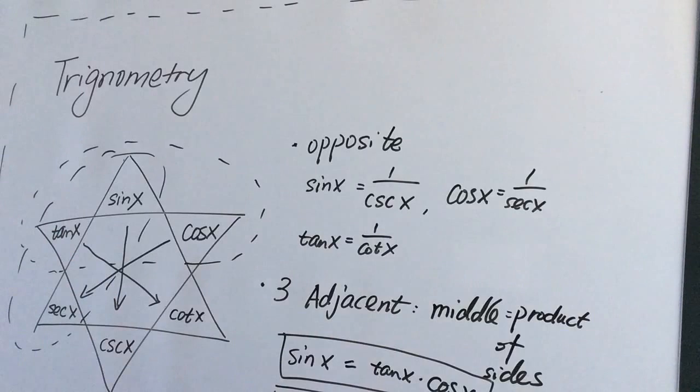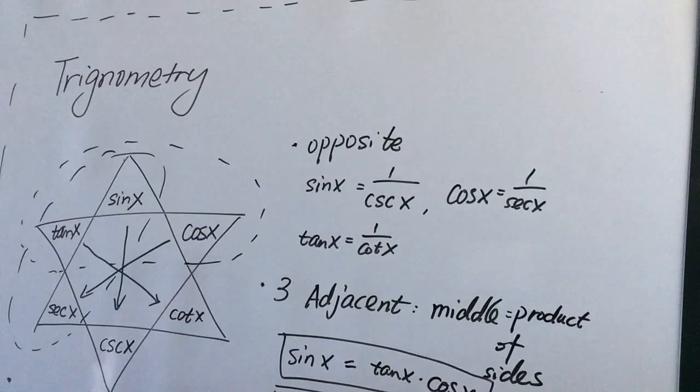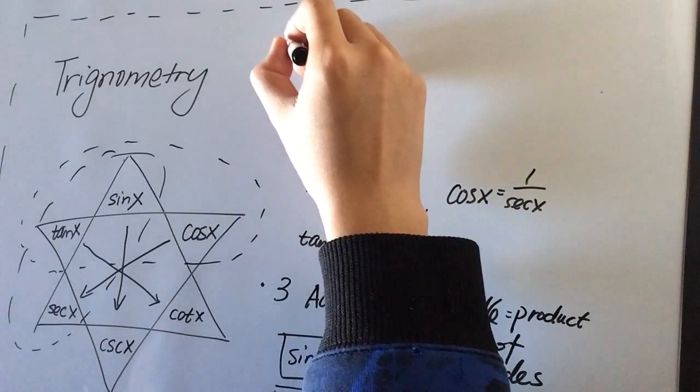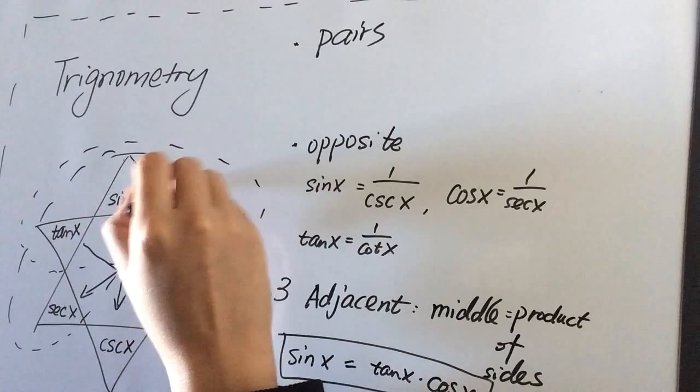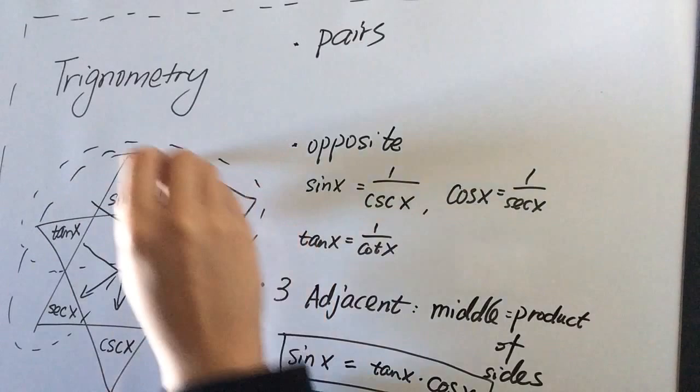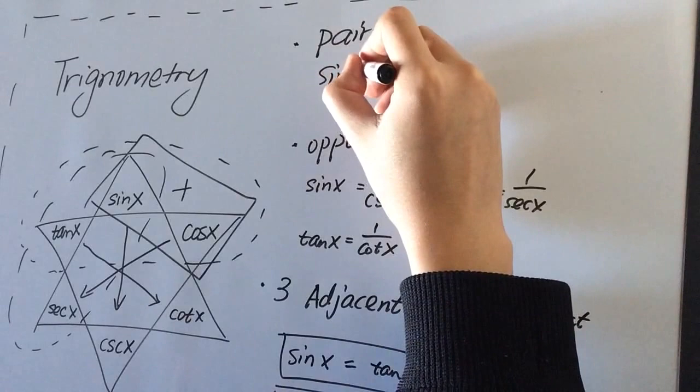So the third trick here is, maybe it's hard for you to see. Maybe I'll write it here. So the third trick is the pairs. So pick any pairs and we can get one. So what's that? For example, we pick this sine and cosine. And square that. We'll get sine squared x plus cosine squared x equals one.